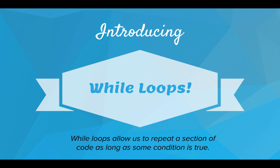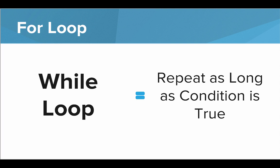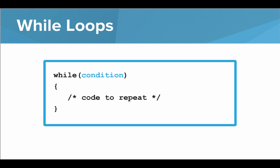Introducing the while loop. While loops allow us to repeat a section of code as long as some condition is true. This is the format of a while loop: we say while, open parentheses, condition, close parentheses, and then the code to repeat goes in between a set of curly brackets.